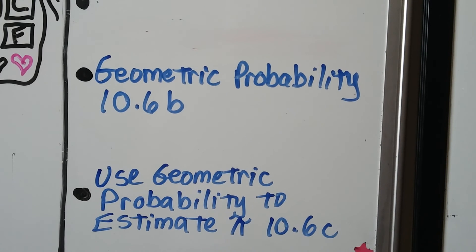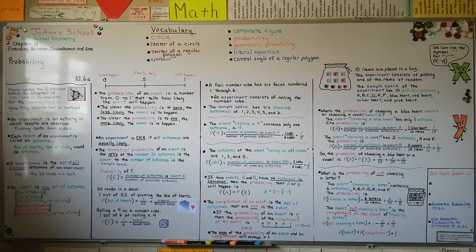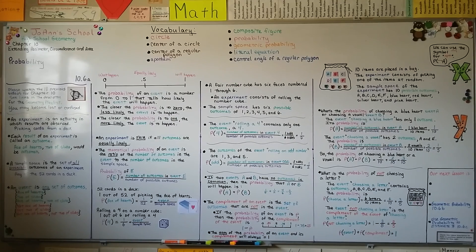We've got two more parts to this lesson: 10.6b, where we're going to talk about geometric probability, and 10.6c, where we're going to use geometric probability to estimate pi. I hope this helped you remember what you learned in eighth grade math and Algebra I. I hope it was helpful and that you're having a good day — keep trying, I'm proud of you, and I'll see you for the rest of the lesson. Bye!